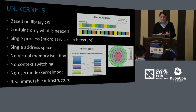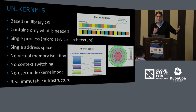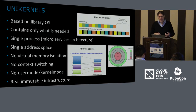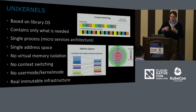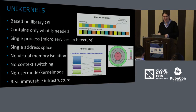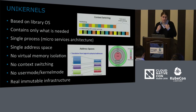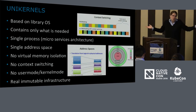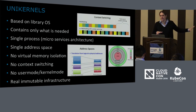It's all based on library OS. All the drivers are library OS. It contains only what it needs. It's a single process — if your application forks, you can't use it, but it does support multi-threading. Single address space, because multi-address space is about protection: making sure your process doesn't go into another process's memory space. No virtual memory isolation, no context switching, and no kernel-mode vs user-mode rings, because everything runs in kernel mode. If you're the only process and you kill the machine, it dies — but you didn't influence anybody else.